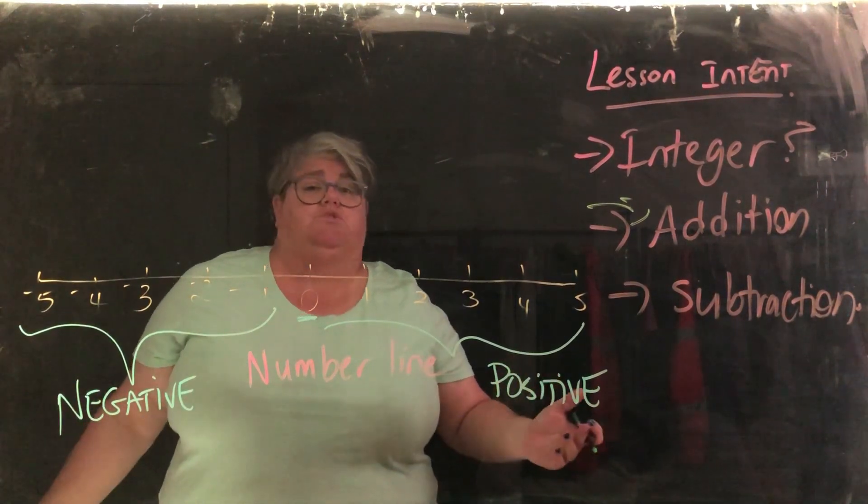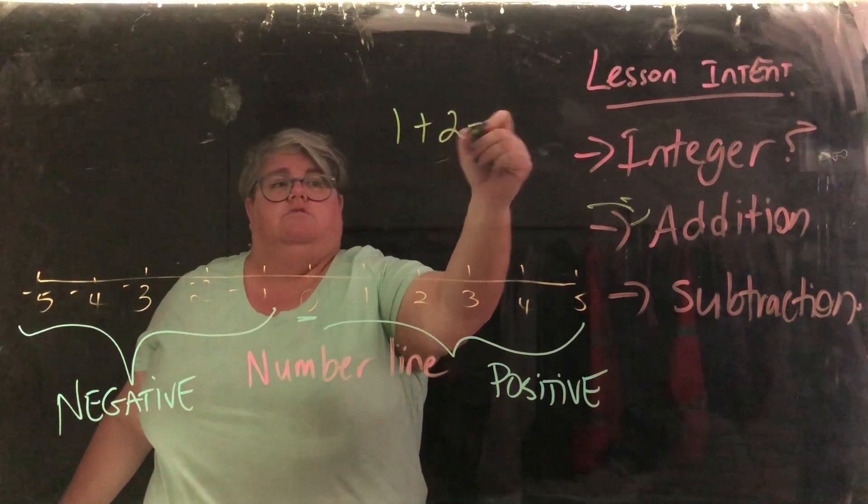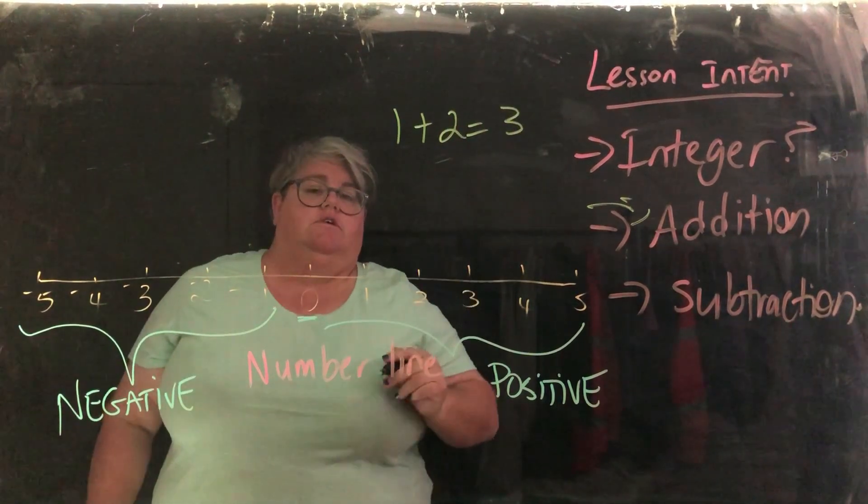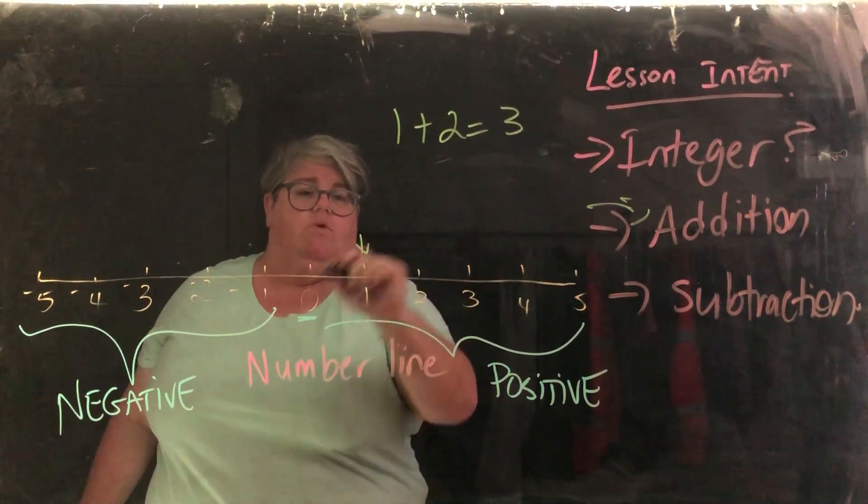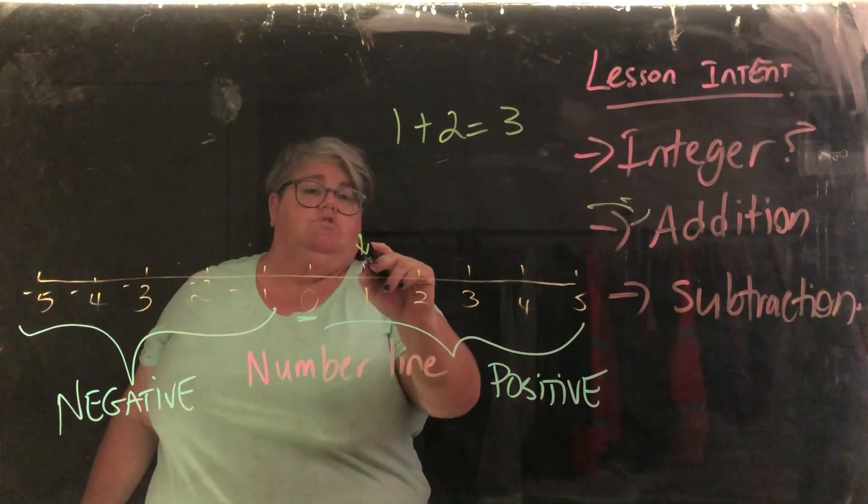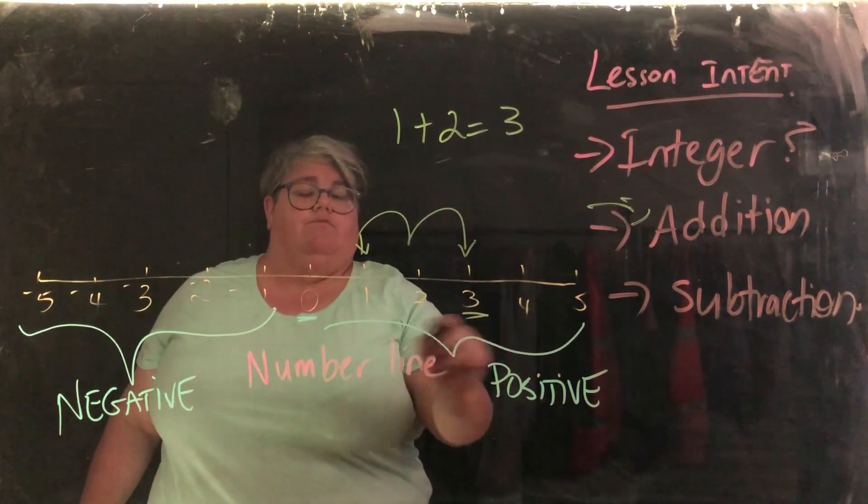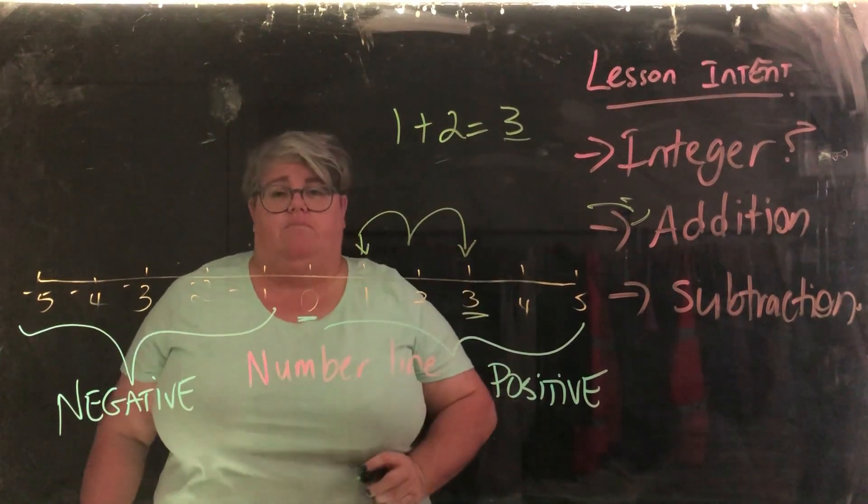So we know from primary school that 1 plus 2 equals 3. So if we start here at 1 and we add 2, 1, 2, we will get 3, which is exactly what we have up here.